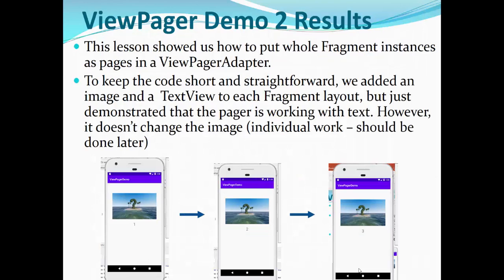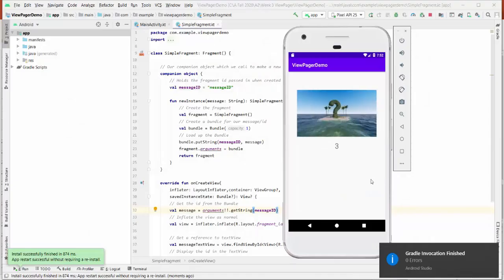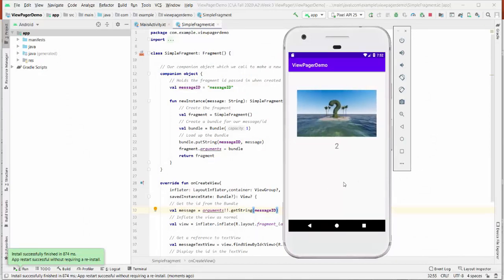As a result, you will get the following: the set of fragments in view pager. This lesson showed us how to put the whole fragment instances as pages in a view page adapter. To keep the code short and straightforward, we added an image and text view to each fragment layout, but just demonstrated that the pager is working with text only. However, it does not change the image; it should be individual work done later. This is four pages like we have from one to four. As I said, we do not change images here. This part will be your individual part later.